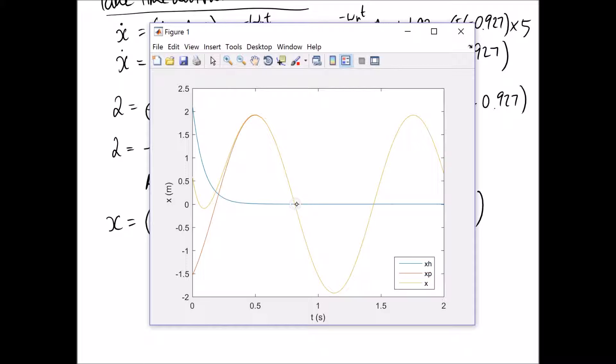So xp is the red line, and that's our forcing function component. You can see it looks like a sine wave, which is what we'd expect. And it's just going to oscillate back and forth forever. And x is the total. So when you add the other two lines together, this is what you get.